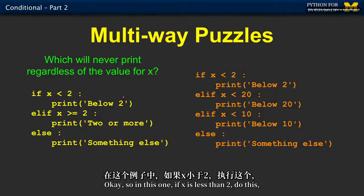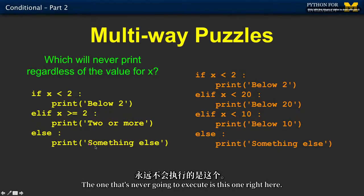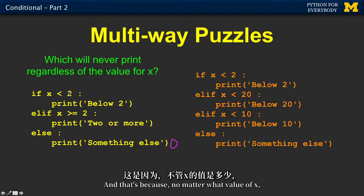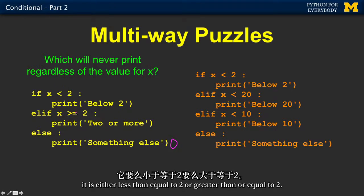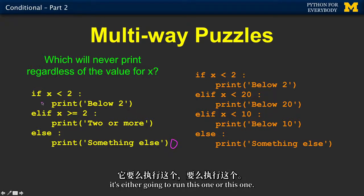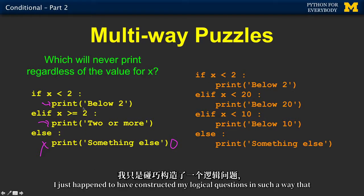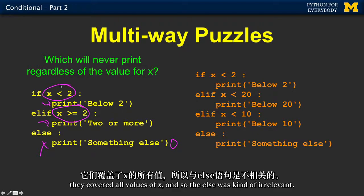In this one, if x is less than 2, do this, else if x greater than or equal to 2. The one that's never going to execute is this one right here. And that's because no matter what value of x, it is either less than equal to 2 or greater than or equal to 2. So for any value of x, no matter what you pick, it's either going to run this one or this one, but it's never going to run that one for any value of x.